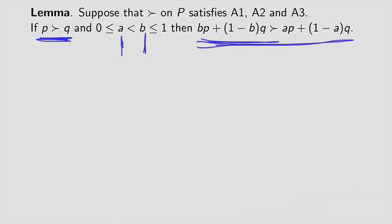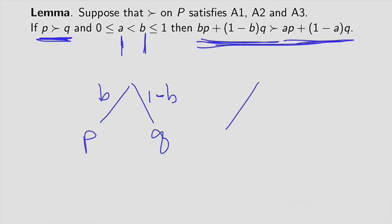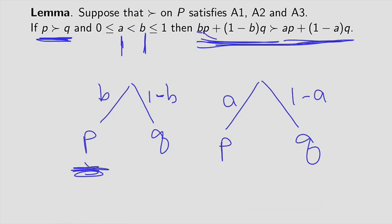Look at the lottery here: this is a compound lottery where with probability b you play lottery p, and with probability 1 minus b you end up playing lottery q. The other lottery is: with probability a you play lottery p, and with probability 1 minus a you end up playing lottery q. Since b is strictly greater than a, it's more likely that you'll end up playing lottery p in the first compound lottery. So if you strictly prefer playing p over q, then you'll strictly prefer situations where it's more likely you play p. That's what this lemma says.